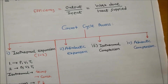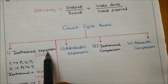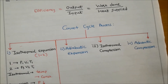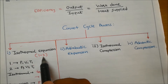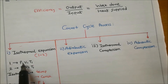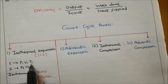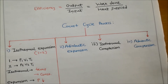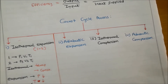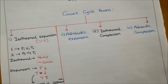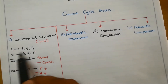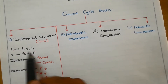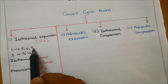We discuss the isothermal expansion process, which takes place from point 1 to point 2. At point 1, pressure is P1, volume is V1, and temperature is T1. At point 2, pressure is P2, volume is V2, and temperature is T1. Isothermal means temperature remains constant, so temperature stays at T1 throughout this process.